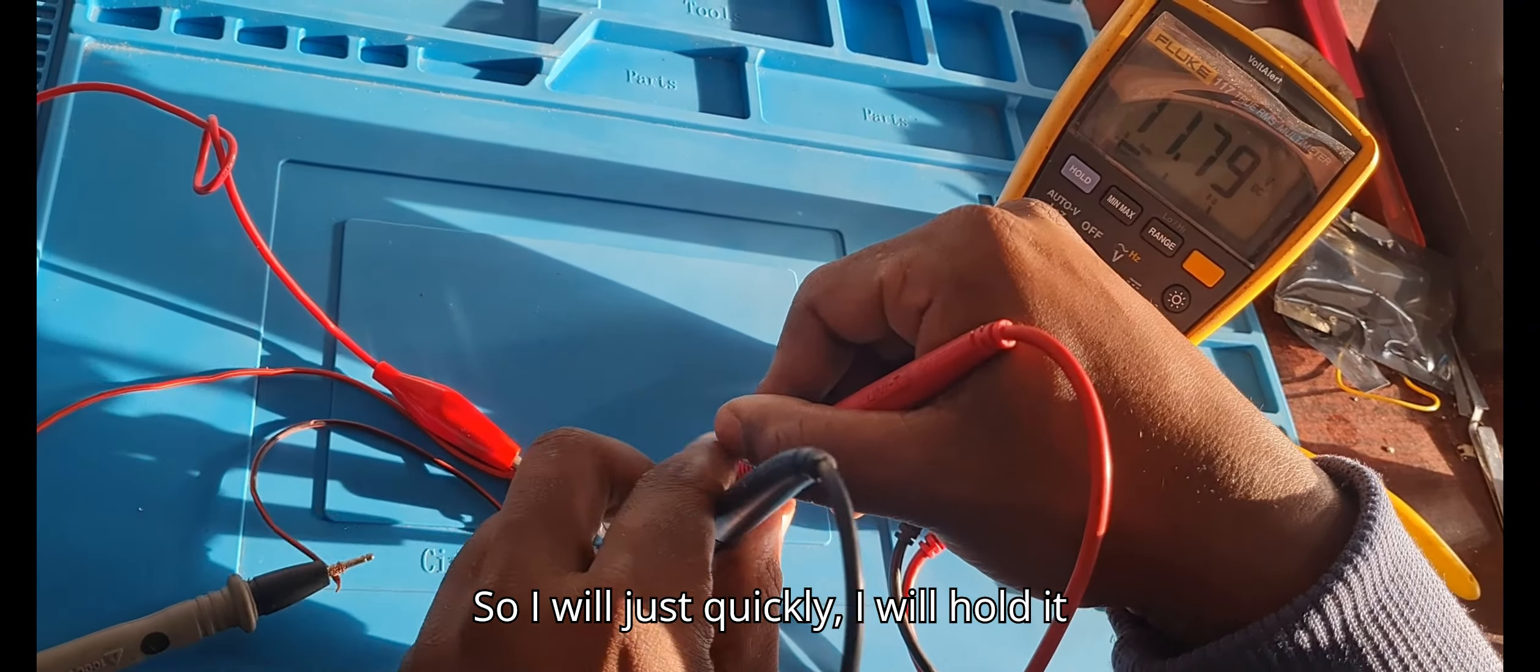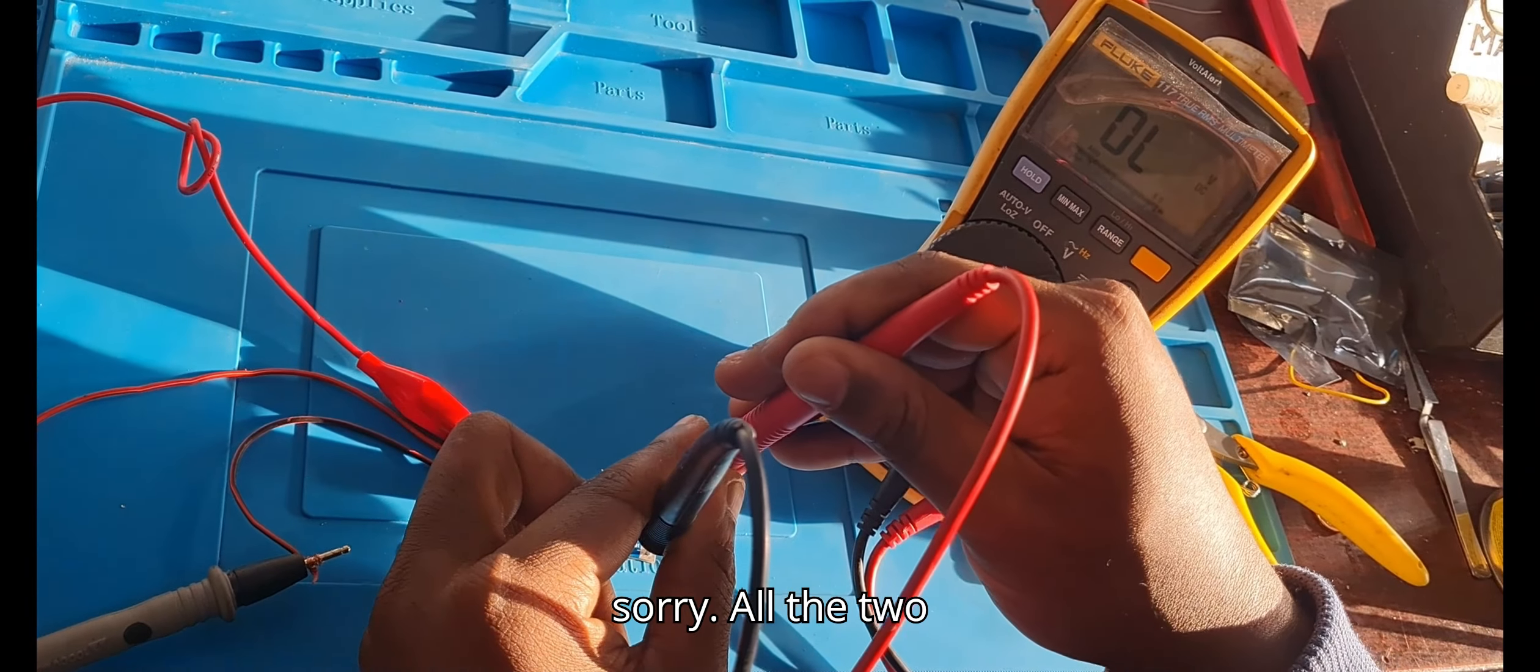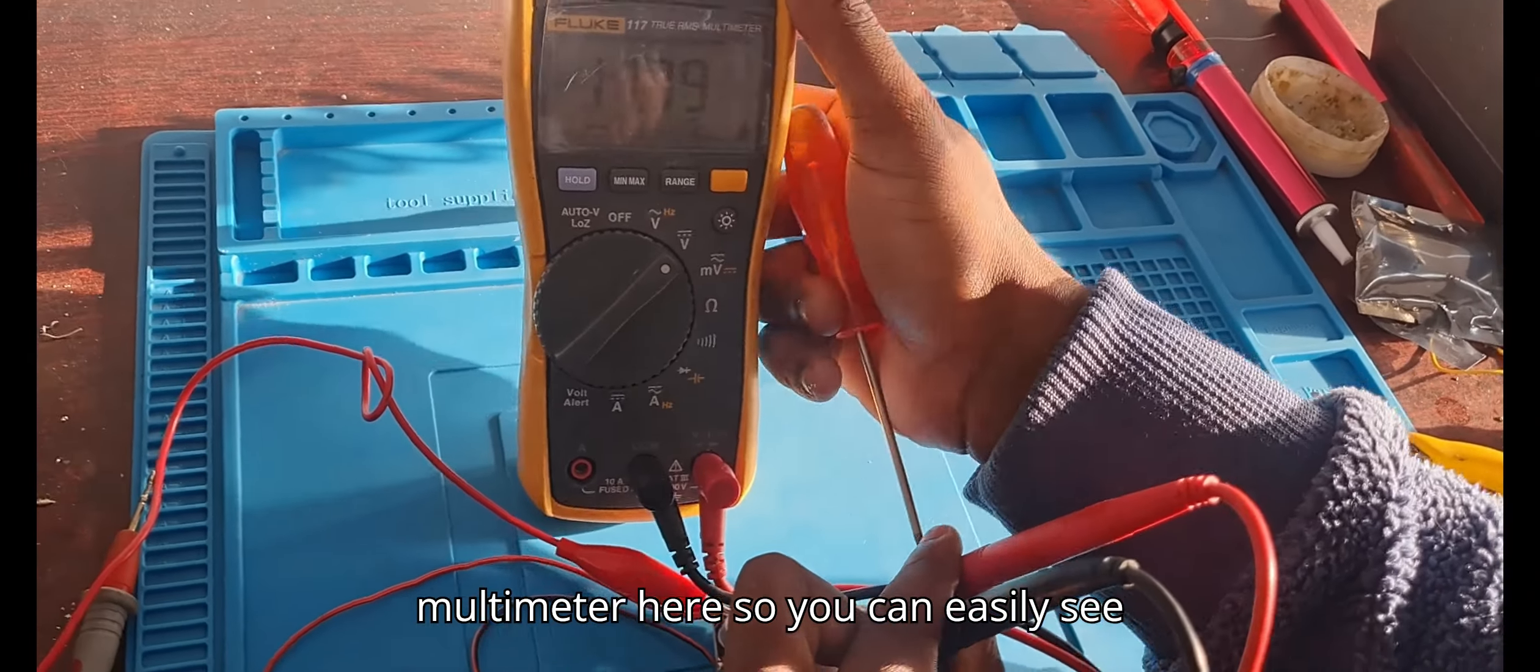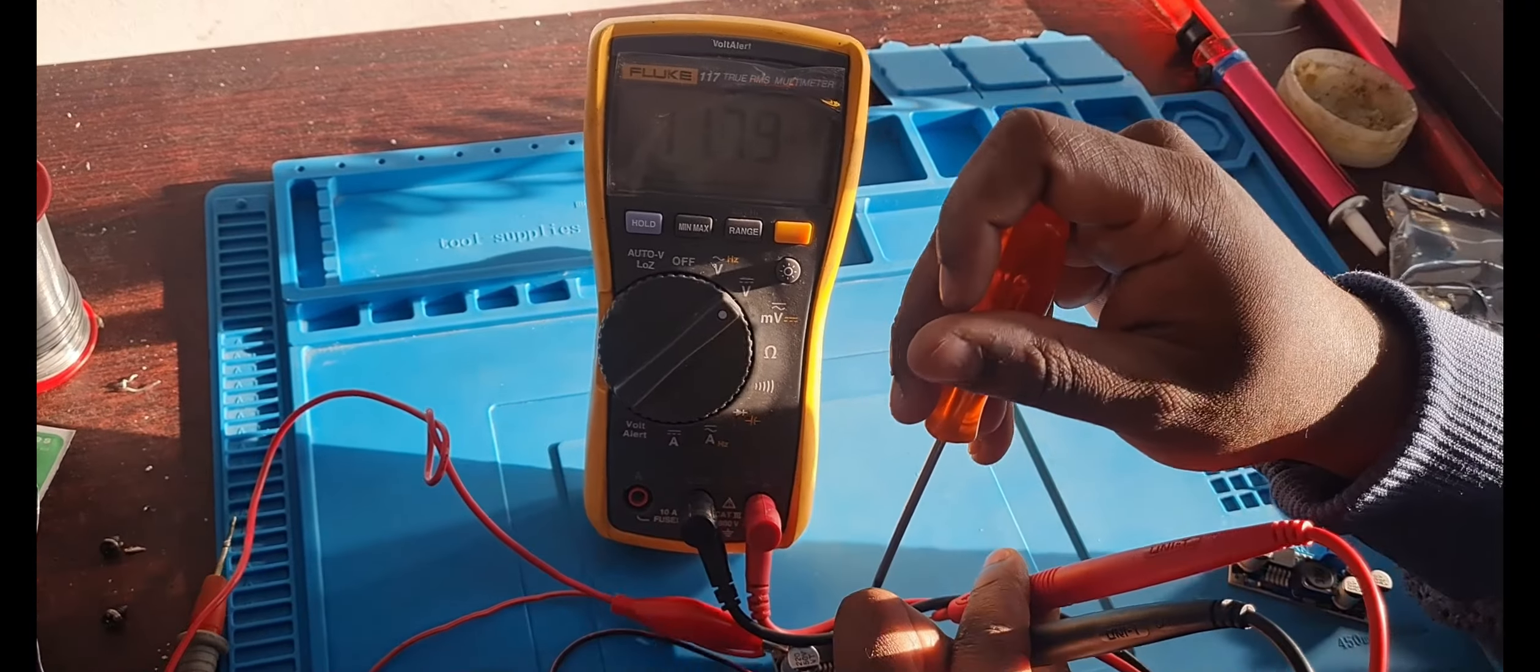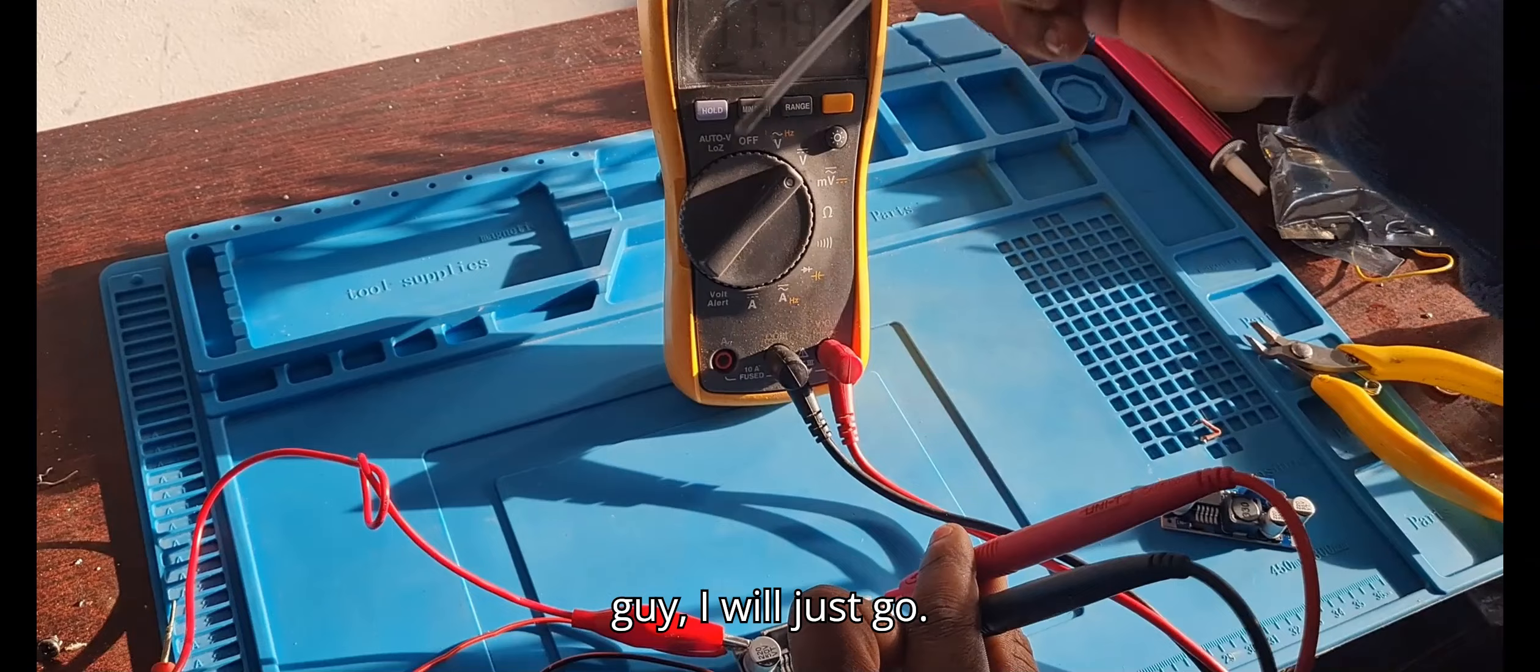I'll hold the two probes there and put the multimeter here so you can easily see while I'm adjusting. This little blue adjustable resistor, I'll now adjust.